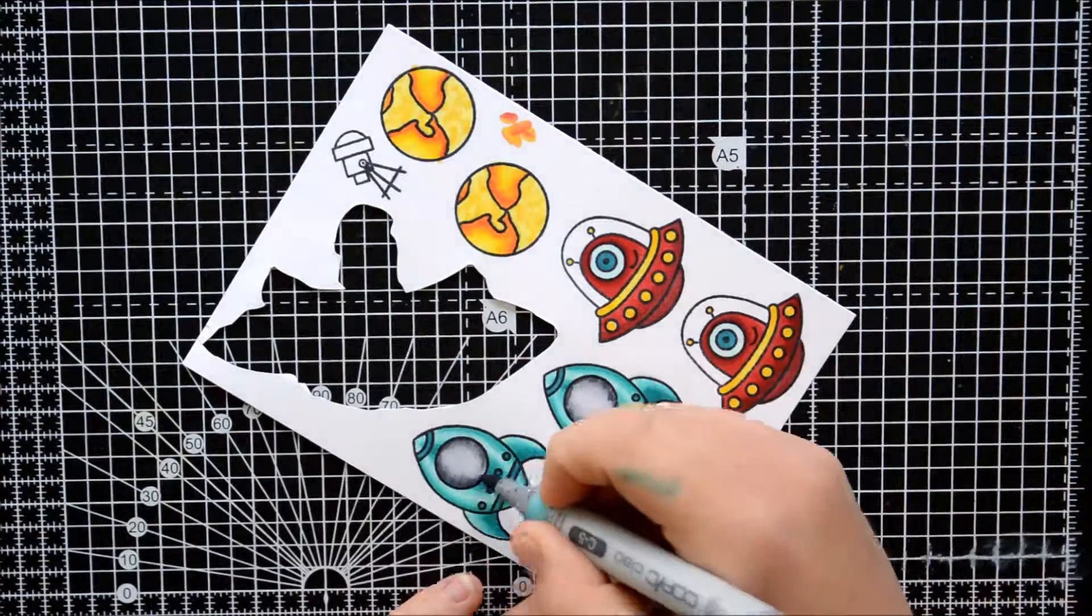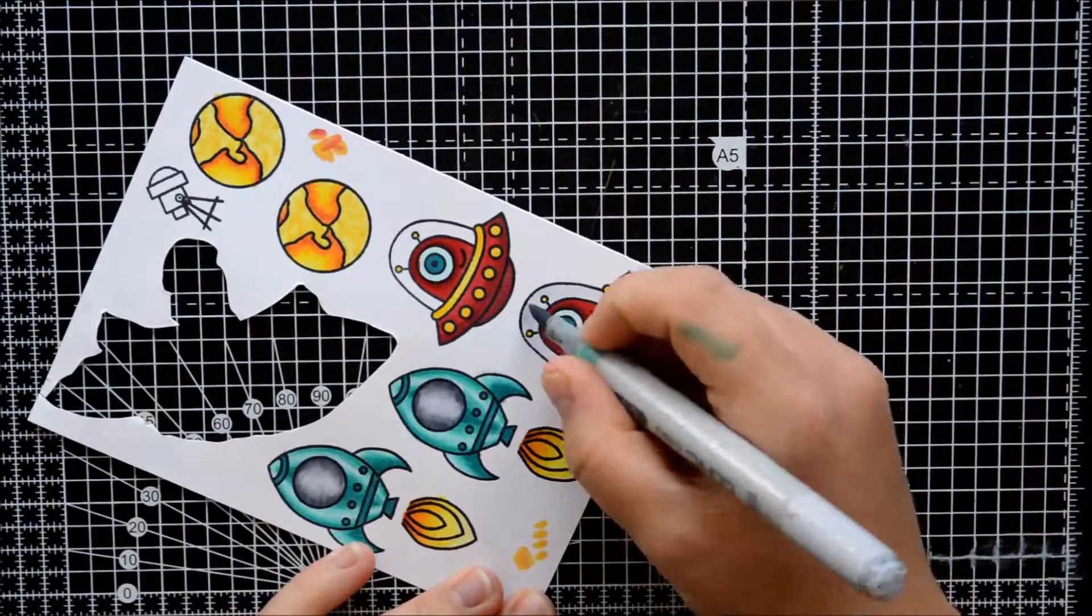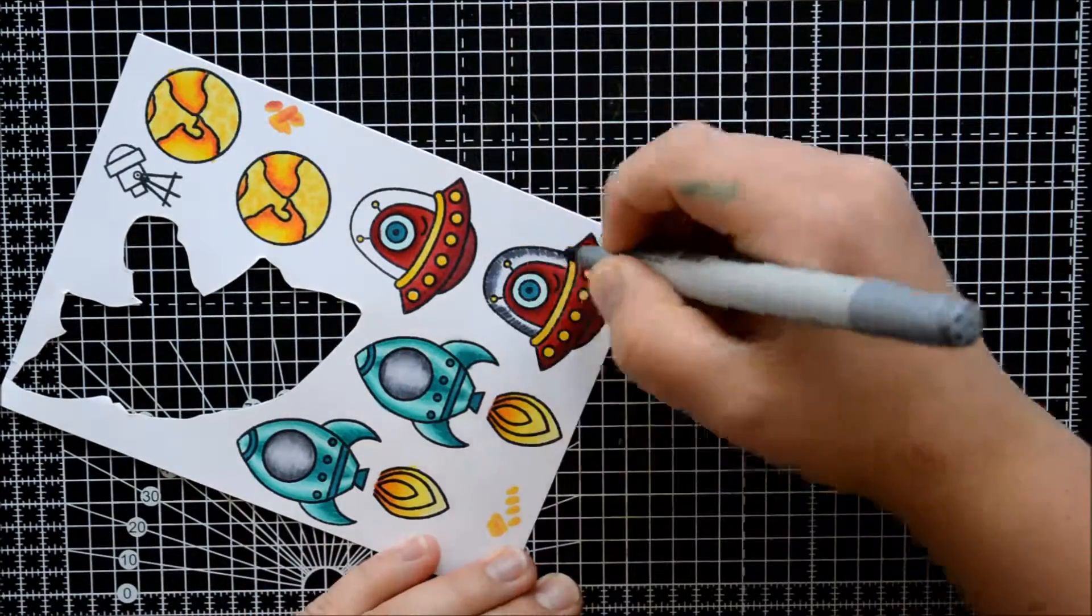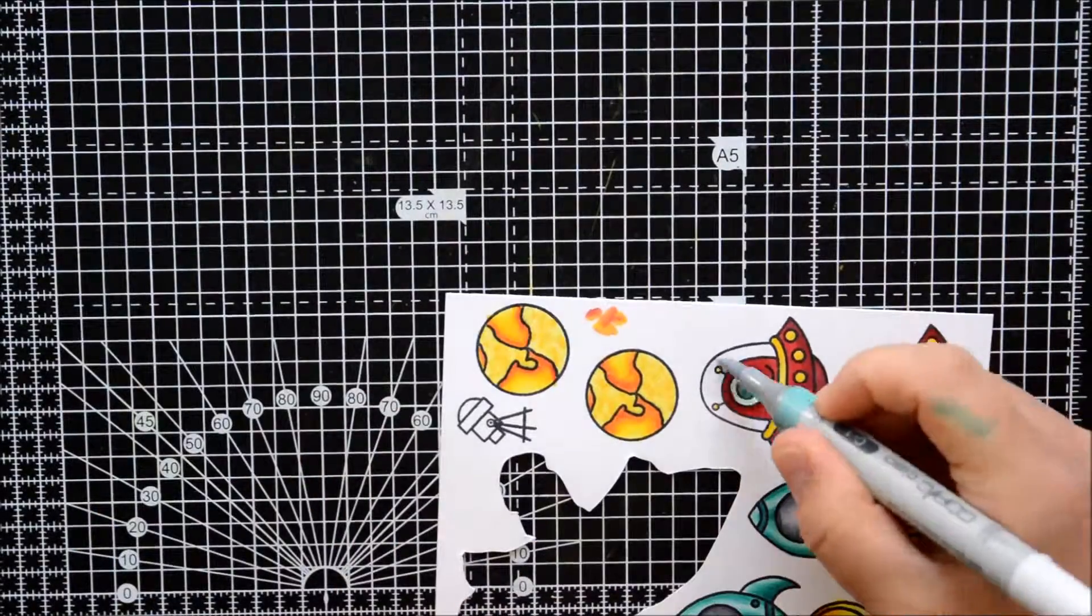I used the grey Copic markers to do the windows and to add a little bit of shading behind the alien. I really like these markers actually, the result is just really nice.